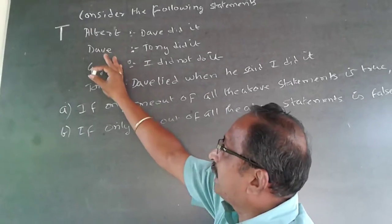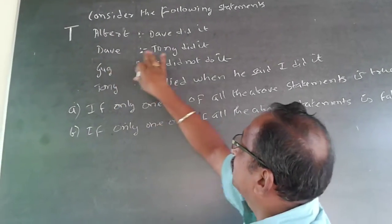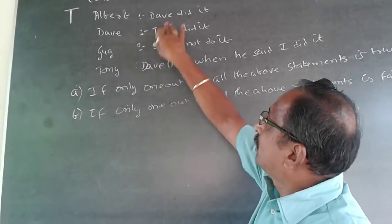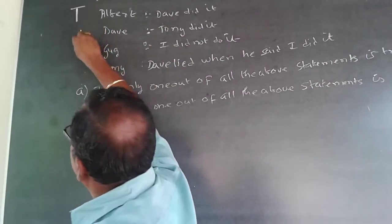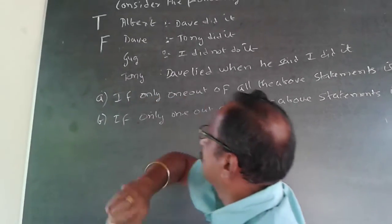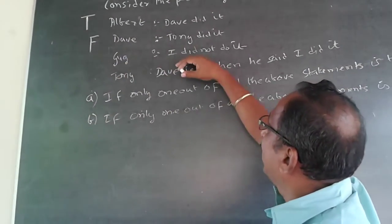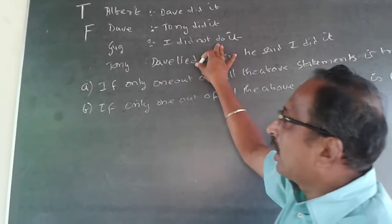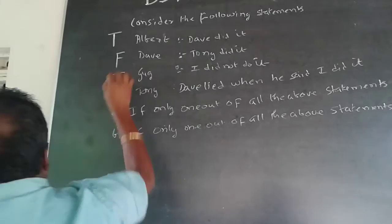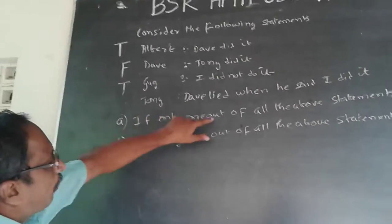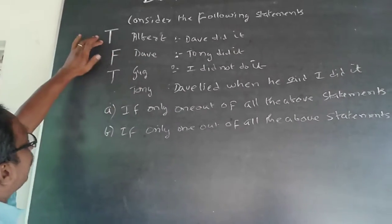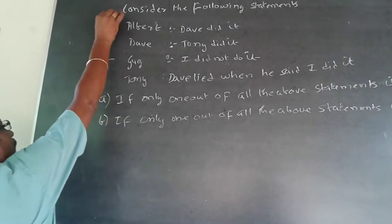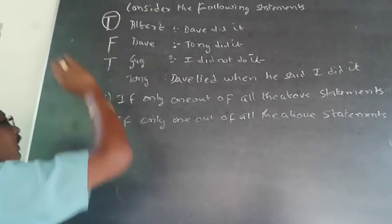I will check whether the other three are false. Dave says Tony did it — because Dave has done it, Tony could not have done it, so this becomes false. Gug says I did not do it — because Dave has done it, Gug has definitely not done it, so Gug is becoming true. I can only have one true statement, but Albert is true and Gug is also true, so my presumption that Albert is speaking the truth is wrong.